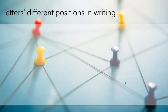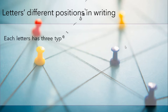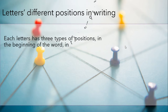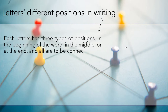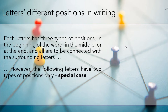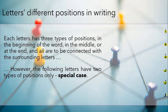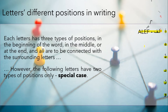Now let's see the positions. Each letter has three types of positions in Arabic: whether at the beginning of the word, in the middle, or at the end — and all of them are connected with the surrounding letters. However, for the following letters, there are only two types of positions — these are the special cases: Alif, Dal, Thal, Ra, Zay, and Waw.